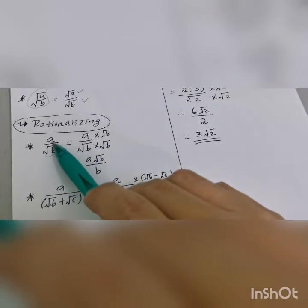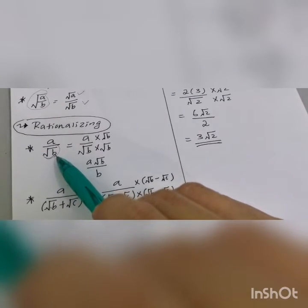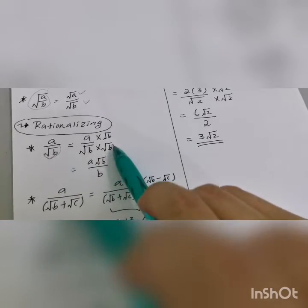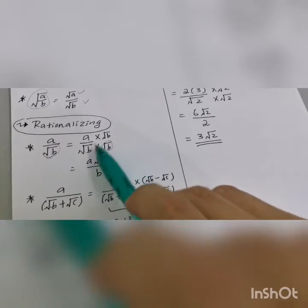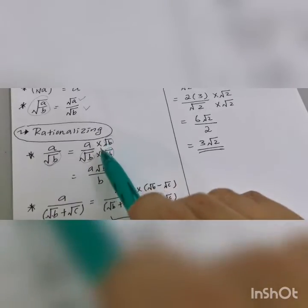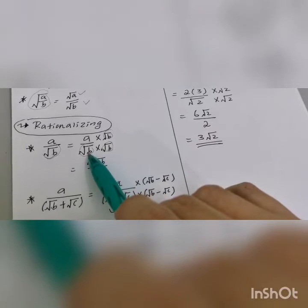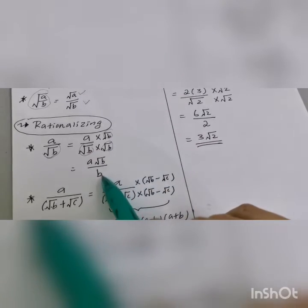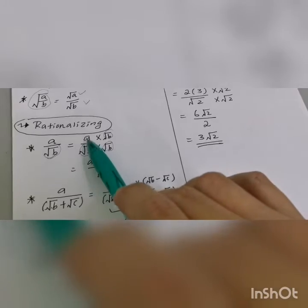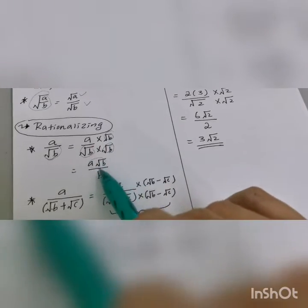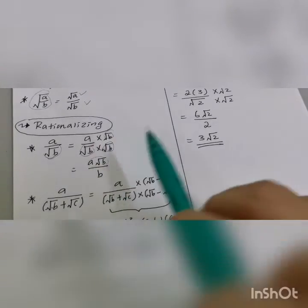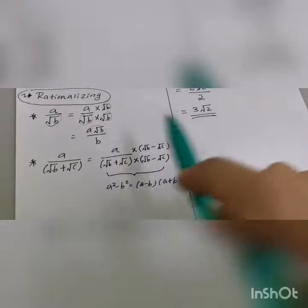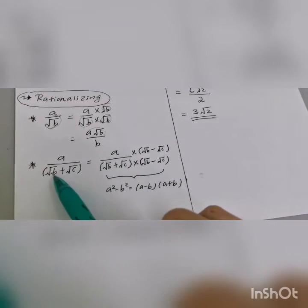When the denominator has a square root, we cannot leave it there. You need to multiply top and bottom by the same number to eliminate it. So square root of b times square root of b becomes b, and a times square root of b stays the same. This is equal to rationalizing.